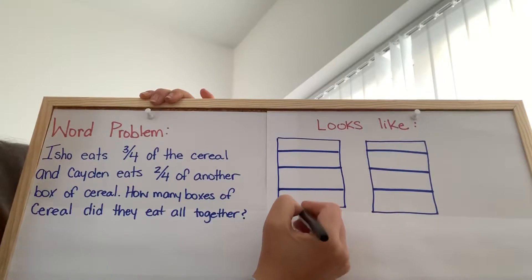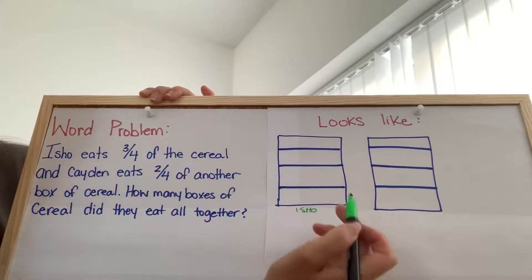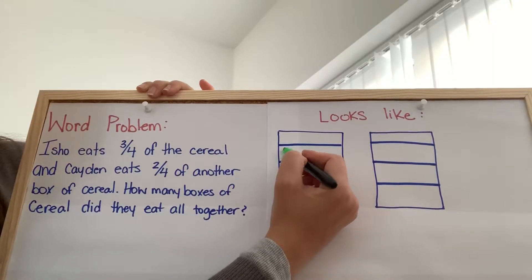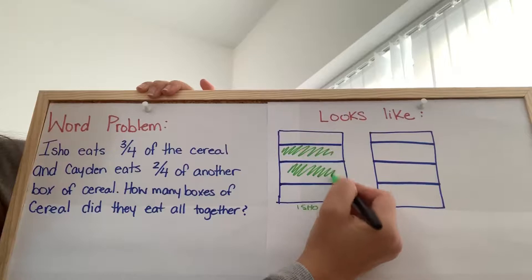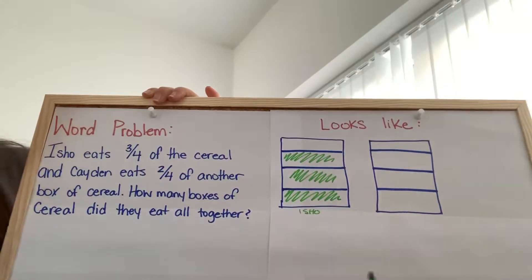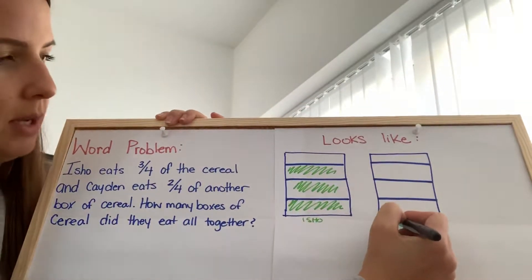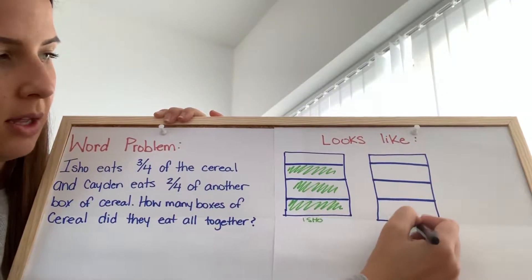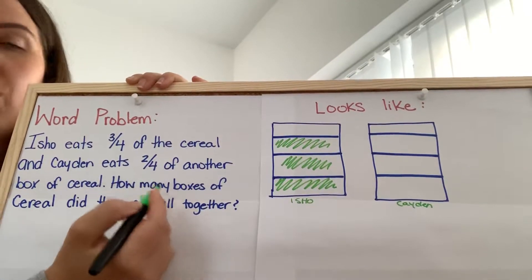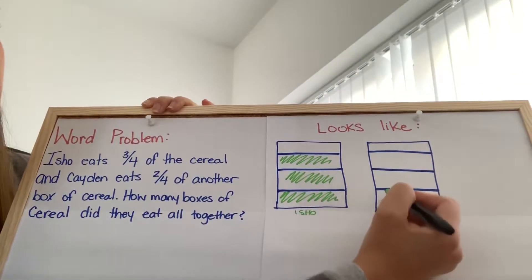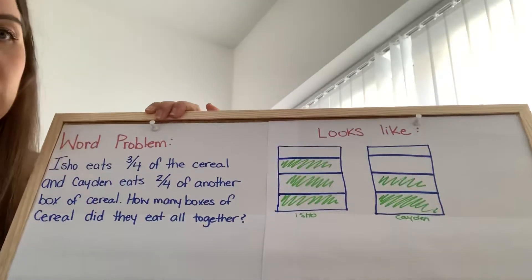So, let's pretend this first one is Isho's box. Okay, and Isho eats three-fourths. Okay, next box. This is going to be Caden's. And Caden eats two-fourths. So, we're just going to do two.